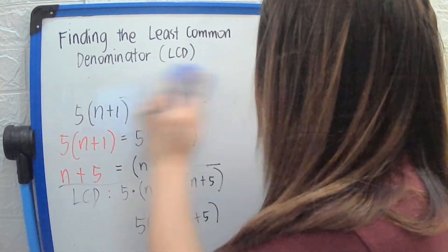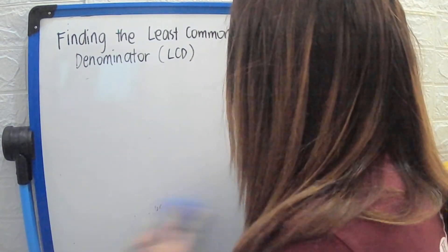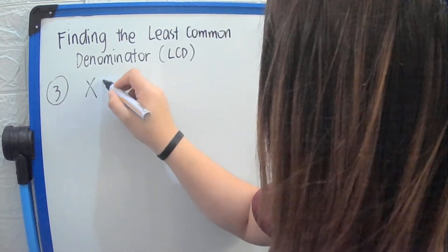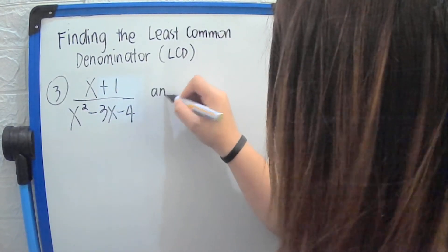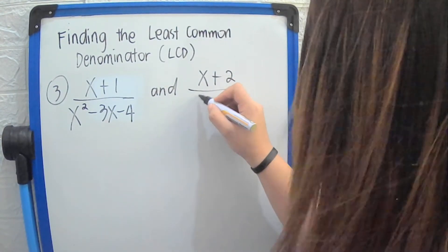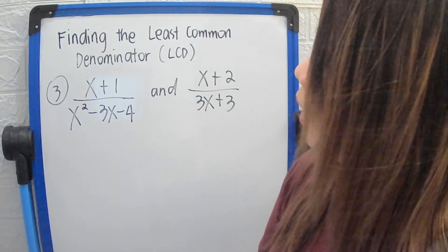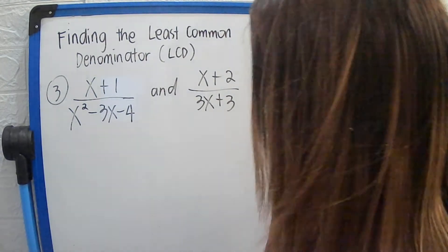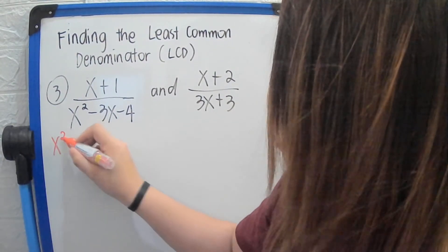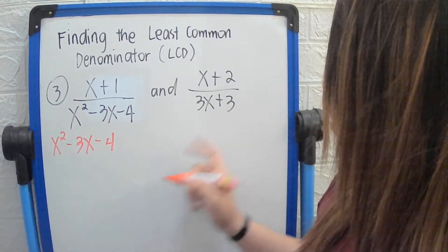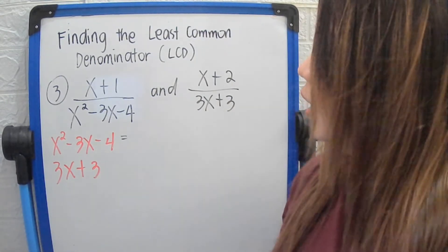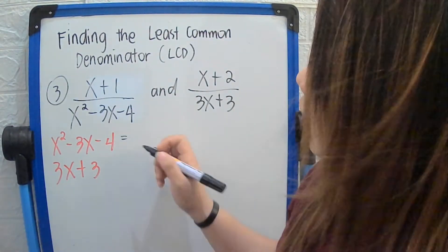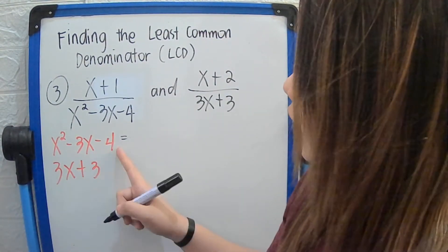What if you are given more than 2 terms? For example, we have (x plus 1) all over (x squared minus 3x minus 4), and another fraction with denominator 3x plus 3. We apply the factoring method. We take the denominator x squared minus 3x minus 4 and the other denominator 3x plus 3. For the first denominator, we factor it out using the general trinomial method, or GT, because we have 3 terms and the last term is negative.